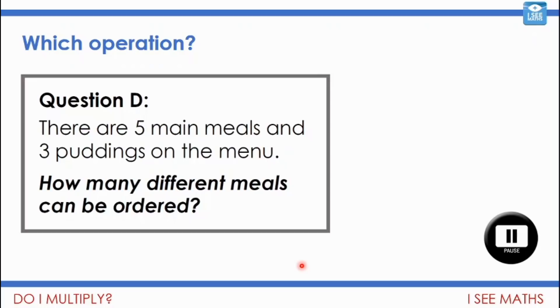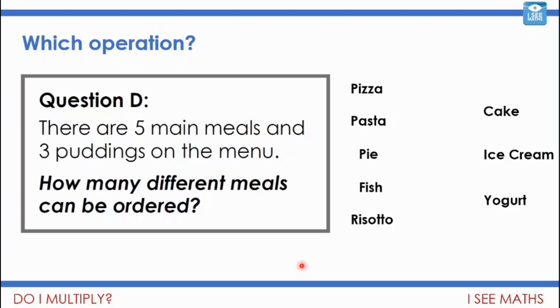Okay, and let's have a look. And for this one, one of the things that I think is interesting is this is a multiplication question. But the picture I would draw is completely different, I would say, to other situations. So let's have a look. Let's say the main meals are pizza, pasta, pie, fish and risotto. And the puddings are cake, ice cream and yoghurt.